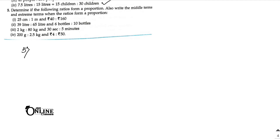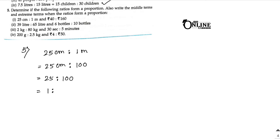Determine if the following ratios form a proportion, and also write the middle terms and extreme terms when the ratios form a proportion. First one: 25 cm is to 1 m. You have to convert both numbers into the same units. So 1 m becomes 100 cm. Therefore 25 is to 100, which simplifies to 1 is to 4. The second ratio is 40 is to 160 — divide by 40 — also 1 is to 4. Both equal, so all four numbers are in proportion.